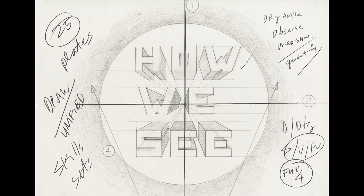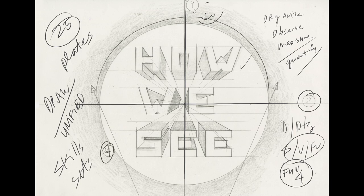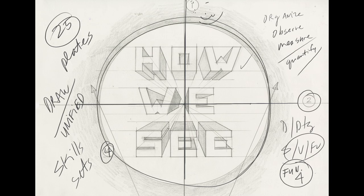Number one is our center of vision, or CV. Number two is our eye line — that's where our eye is connected to. Number four is our cone of vision, this large circle, and later I'll talk about what happens inside our cone of vision and even outside it.